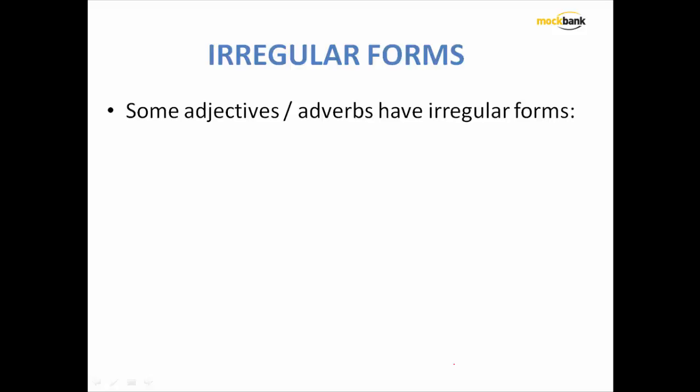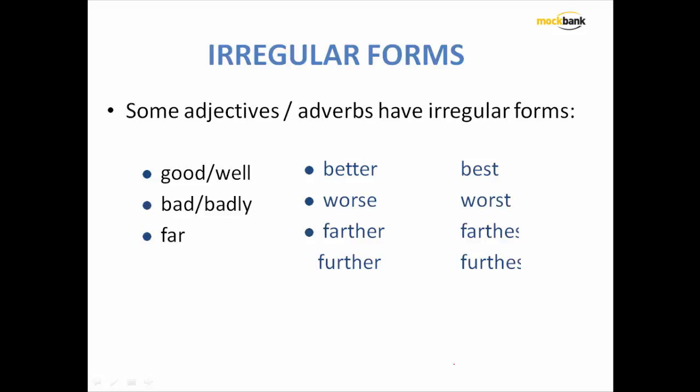Some adjectives and adverbs have irregular forms. What are they? For example, good, bad, and far. The comparative degree of good is better and superlative degree is best. How about bad? Bad becomes worse and worst. Far, farther, and farthest. They are called irregular forms. They do not follow the rules that we just talked about. And these irregular forms actually create problems in your sentence correction problems in the examination. You must be going through the list of irregular forms of adjectives.